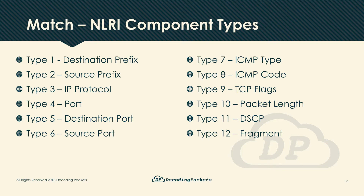Without going into the structure of each component type, the encoding in the NLRI is done in a flexible manner. For example, types 4, 5, and 6 are Layer 4/port-related components — they can each carry a single port, a range of ports, all ports greater than a port, all ports less than a port, two separate ranges, and so on, covering all scenarios. These will be examined in the demo; alternatively, RFC 5575 has all encodings well documented.